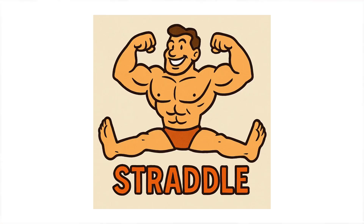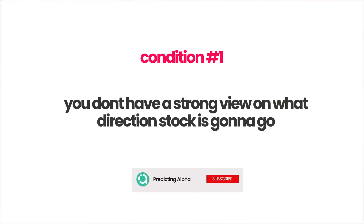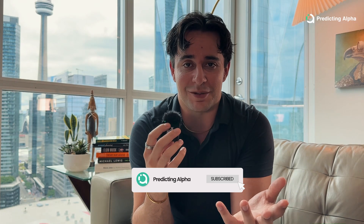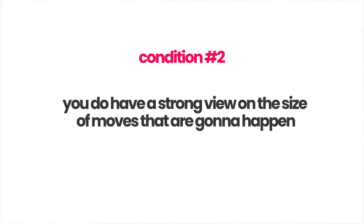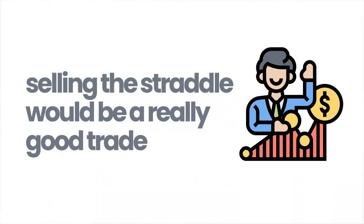All of this combined is why the straddle is the cleanest way to trade volatility, not direction. So when does it make sense to use a straddle? There are basically two conditions. One, you don't have a strong view on what direction the stock is going to go. And number two, you do have a strong view on the size of moves. You may not know which direction, but you feel confident it's going to move less than implied. For example, the market's pricing in a 10% move and you think it's only going to move 4% — selling the straddle will be a really good trade.